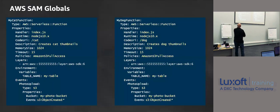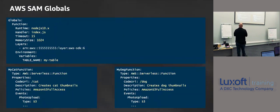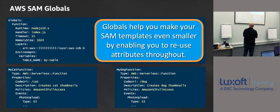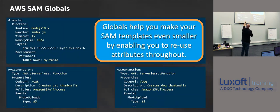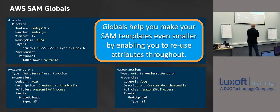What I can do is move all the duplicate stuff into globals and just keep the pertinent stuff inside the functions themselves. When using SAM, it's very helpful to use globals. If I set memory size to 1024 in globals, I can override that at the function level — I can say I want all my functions to be 1024, but this one needs to be 2048. That's how globals work. Let's get into layers a little deeper.